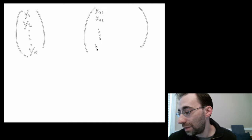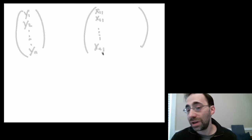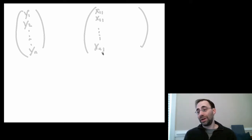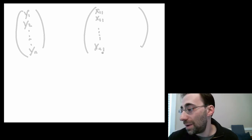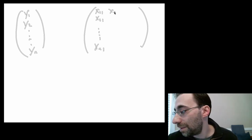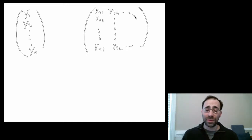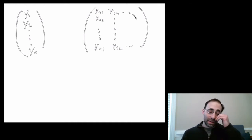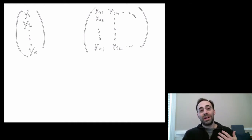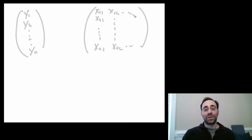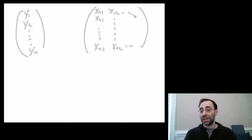Each one of these columns corresponds to a bunch of data points for the first variable, and then you have the second variable, and so on. The idea is you can represent data for one or more variables via vectors and matrices, and then use these vectors and matrices to directly compute things like coefficients of linear regressions.